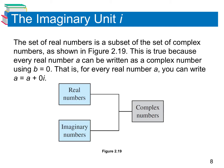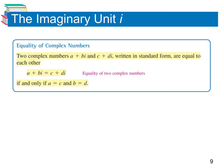We're going to skip this slide, so don't worry about it. Next we have the equality of complex numbers. If we have two complex numbers a plus bi and c plus di and they're equal to each other, that means the real parts are equal and the imaginary parts are equal — so a equals c and b equals d.